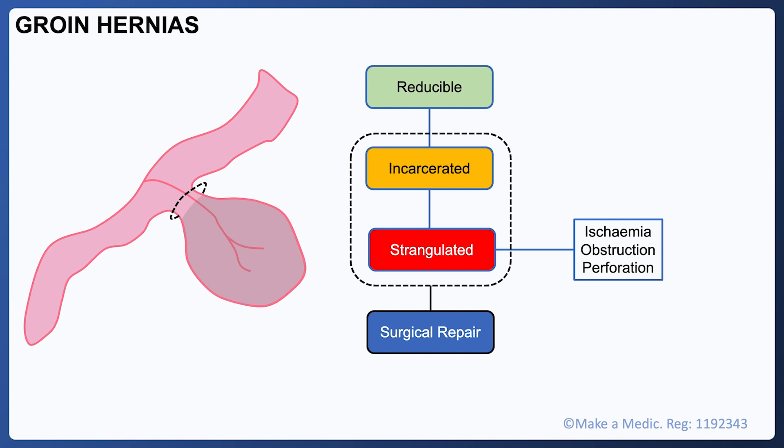If the neck of the hernia is very narrow, it can strangle the blood vessels that supply the loop of bowel within the hernial sac, resulting in ischemia and necrosis of the bowel. This is a surgical emergency that requires urgent surgical intervention. Hernias are managed surgically, and the urgency depends on the nature of the presentation. Many hernias can be managed as an outpatient with an elective mesh repair; however, strangulated hernias will require emergency surgery and, in the worst cases, may even require resection of a segment of bowel.